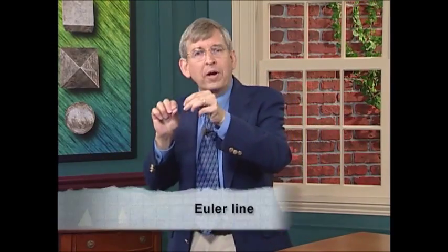It turns out that these centers were known to antiquity, but an amazing fact about them was not known until the 18th century. That amazing fact is that for any triangle whatsoever, the orthocenter, the centroid, and the circumcenter all lie on one straight line. And that straight line is called the Euler line.